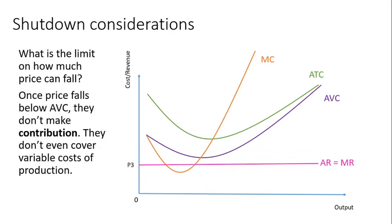But if the price keeps falling, you can find another loss-minimization quantity where MC equals MR and work out the loss. Once the price falls below the average variable cost, the firm doesn't even make any positive contribution — they don't even cover the variable cost of production. At that point, let's get out of this industry immediately. We've paid our fixed costs and those are sunk costs. The key question each day is: will I have sold enough to cover the cost of making the things I'm making today? If not, don't even bother.